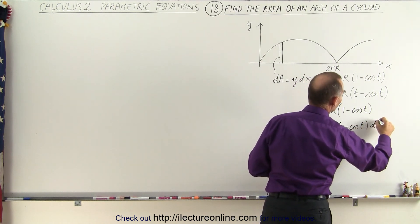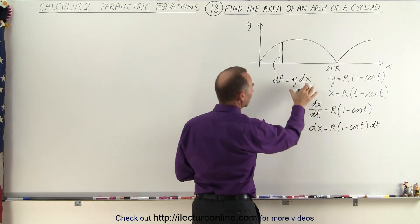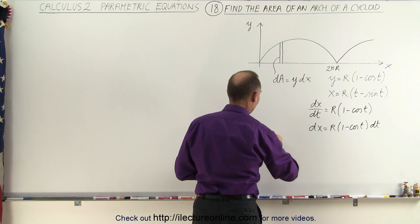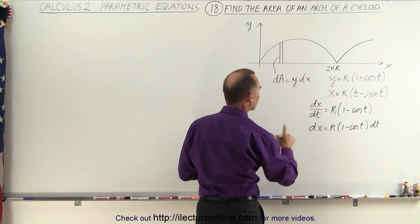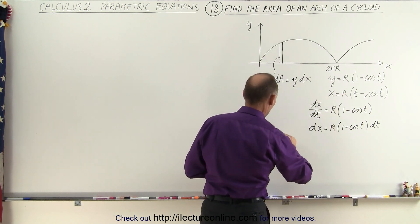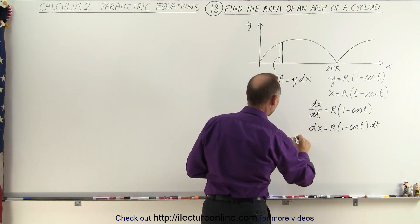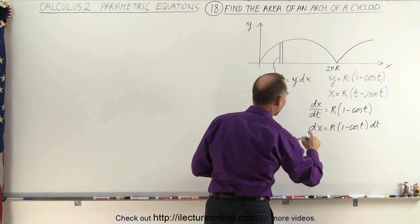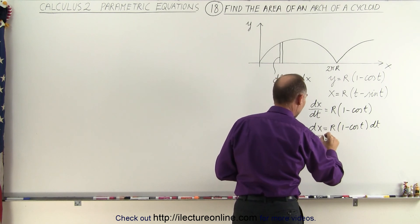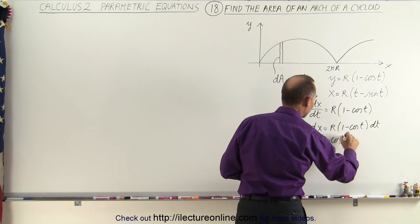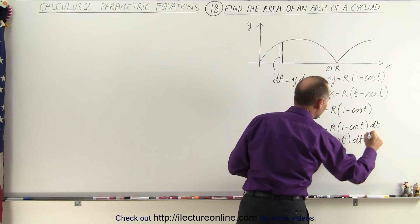And now we plug that in here for dA, so we have dA is equal to y which is r times 1 minus the cosine of t times dx which is equal to r times 1 minus the cosine of t times dt.